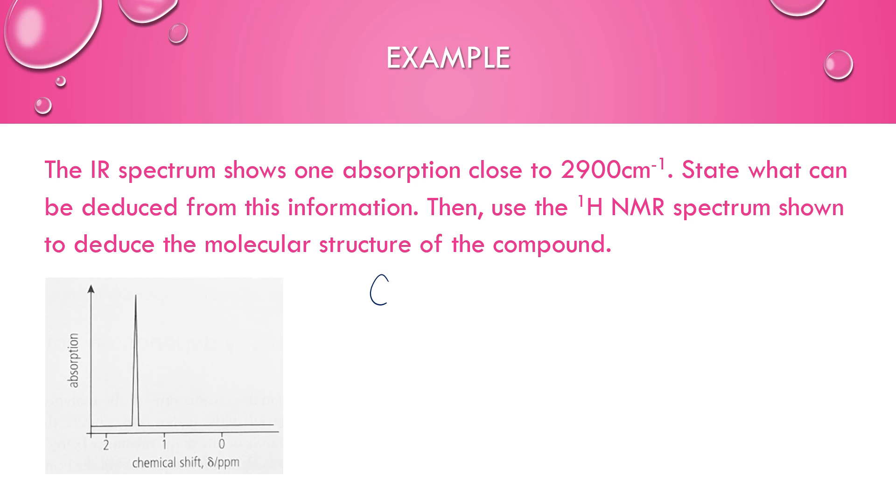Okay, so we already know that our molecular formula is C6H12. And we know that there are no CH3 groups. So now we say the IR spectrum shows one absorption close to 2900 wavenumber. So if you use your data booklet, now we're in section 20 for the IR data. So we can see 2900 is probably referring to the CH for alkanes, alkenes or arines.